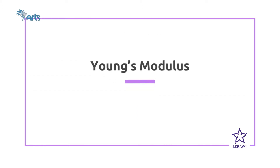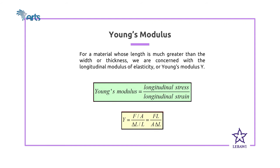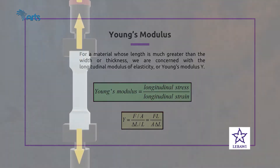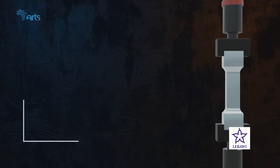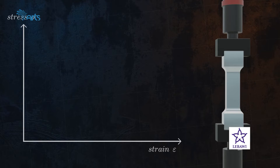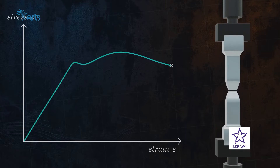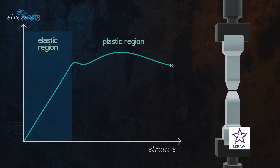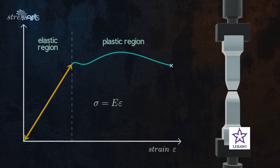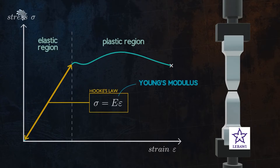Young's modulus, sometimes called elasticity modulus, is the ratio of stress to strain of the material. It tells us the stiffness of a material. For instance, the Young's modulus of steel is about 200 gigapascal, meaning we have to apply a pressure of 200 gigapascal to stretch one meter length of steel by an additional one meter. Since strain has no unit, the unit of Young's modulus is again Pascal.